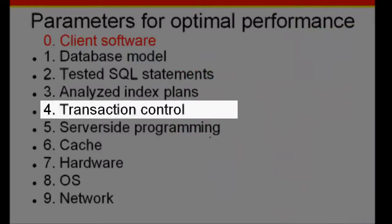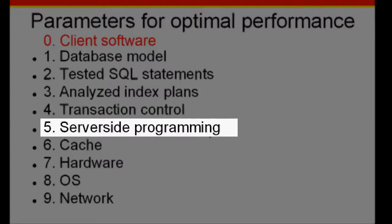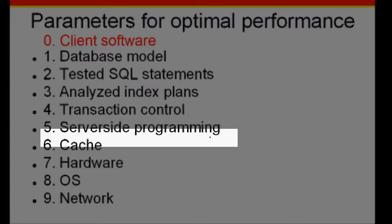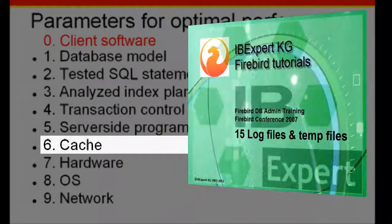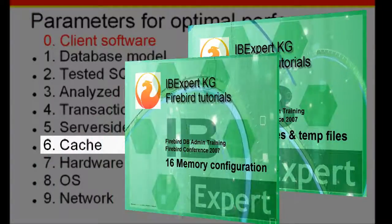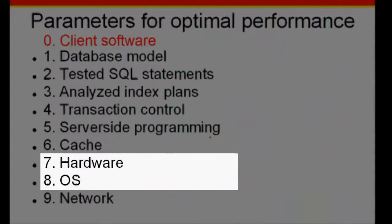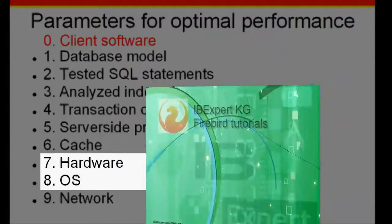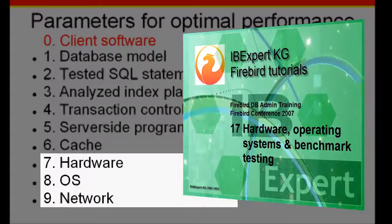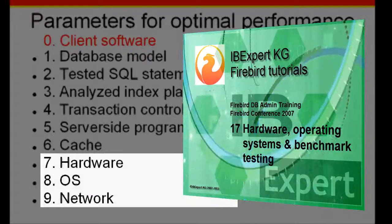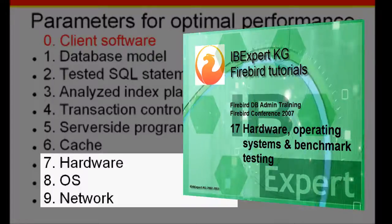Transaction control: monitor, analyze and improve. Server-side programming: let the server do the work, rather than transferring masses of data pages to the client and performing your queries there. Optimizing cache — this subject has been dealt with in tutorials 15, Lock Files and Temp Files, and 16, Memory Configuration. Hardware and Operating System were covered in tutorial 17, Hardware, Operating Systems and Benchmark Testing. Network: view our brief excursion on optimizing data transfer, also covered in tutorial 17.